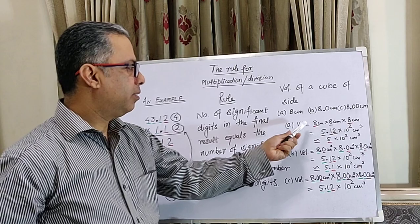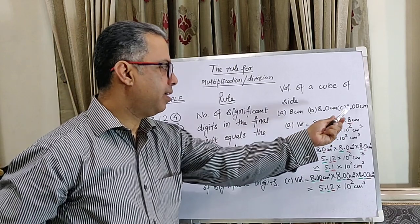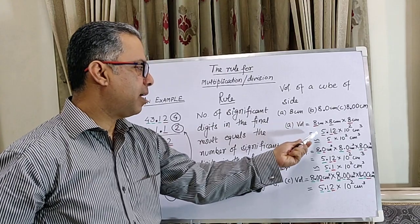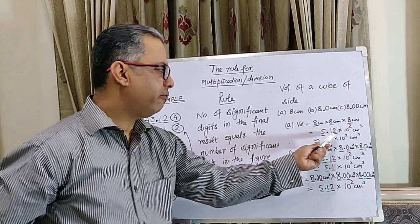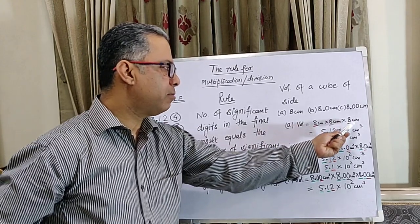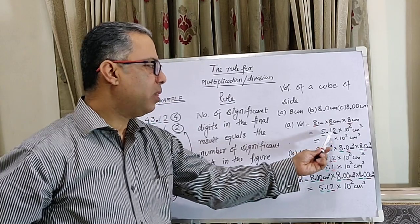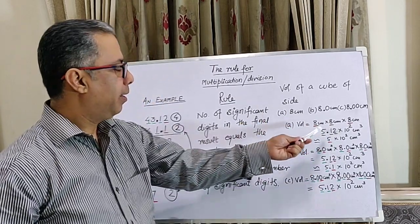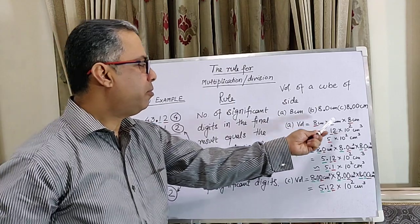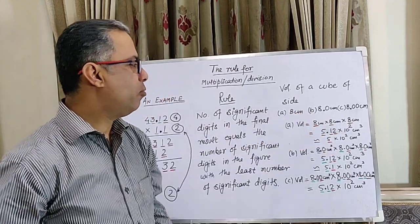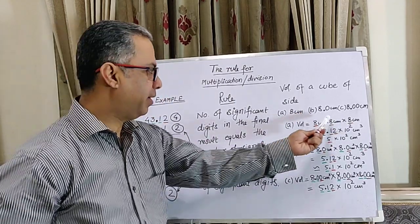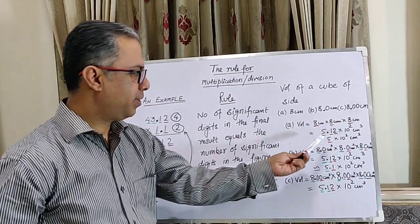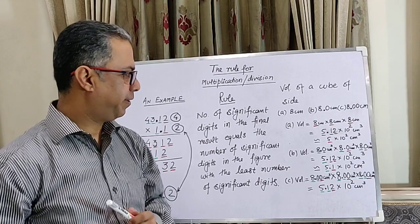In the first case, the volume is 8 cm × 8 cm × 8 cm. All these digits are uncertain and therefore the result 5.12 × 10² cm³ has all three uncertain digits. Since the input figures had only one significant digit, the final answer has to be rounded off to exactly one significant digit.